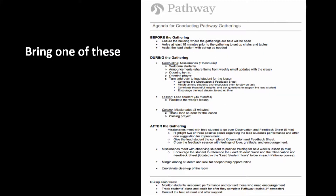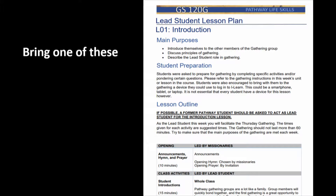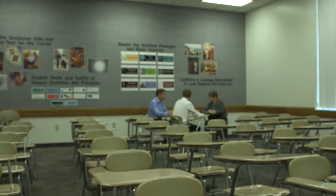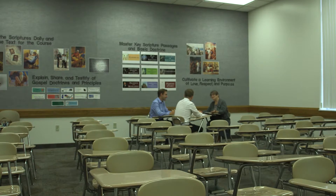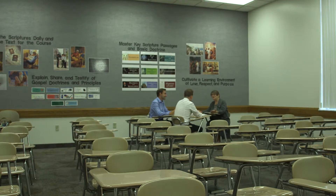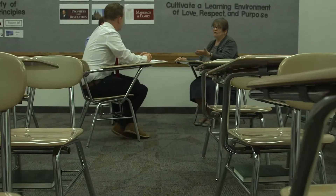Bring one of these — this is the agenda, which will help you know what is supposed to happen at the gathering and what you are supposed to do. Bring one of these as well — this is the lead student lesson plan so you can follow along, and just in case you might need to lead in an emergency. After the gathering, one of the missionaries and the observing student meet with the lead student for five minutes to give helpful and constructive feedback using the observation and feedback sheet. The observing student will be the lead student the following week.